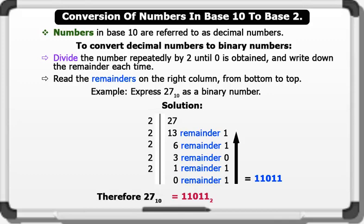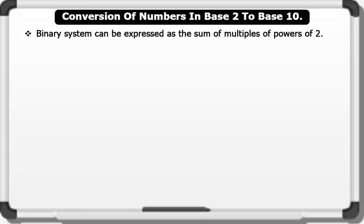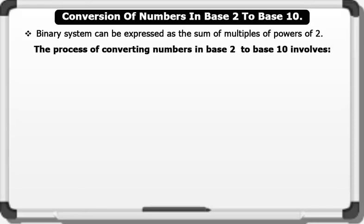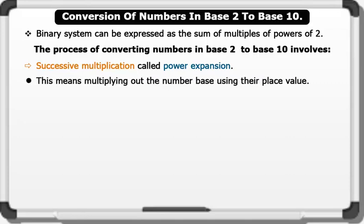That's wonderful! Now let's convert numbers in Base 2 to Base 10. Remember that the binary system can be expressed as the sum of multiples of powers of 2. The process of converting numbers in Base 2 to Base 10 involves successive multiplication called power expansion. This means multiplying out the number base using their place value.